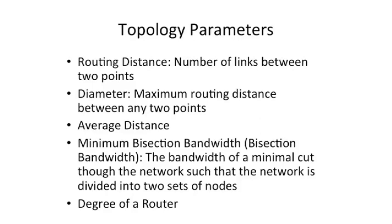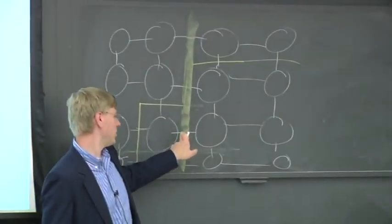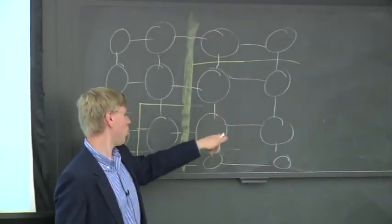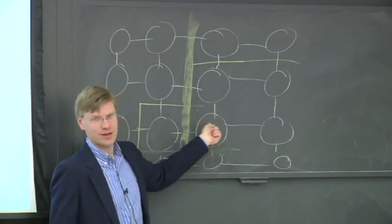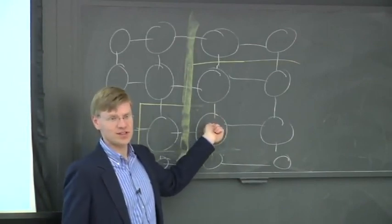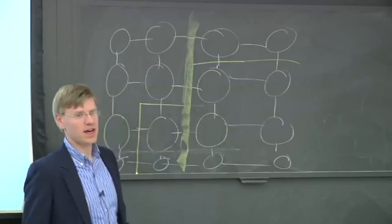So we'll talk about that as the degree. So in something like a 4-ary 2-cube here, we're going to see that we're going to have 1, 2, 3, 4, and maybe 1 from the node itself. So our degree here is 4 or 5, depending on how you count.